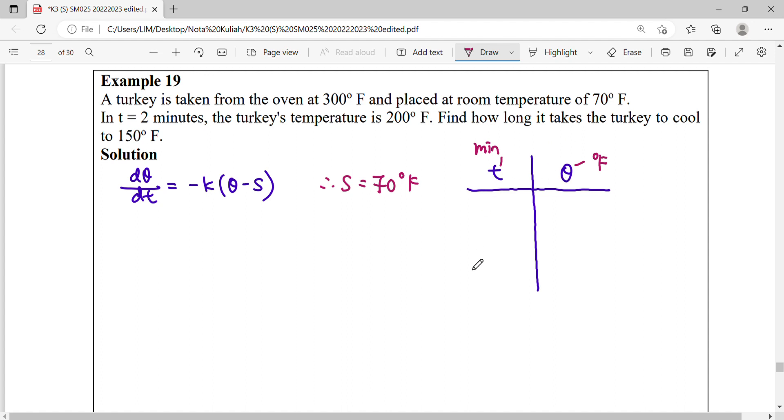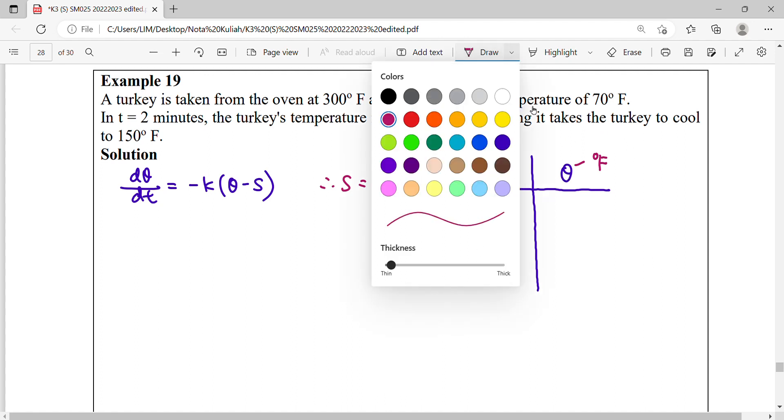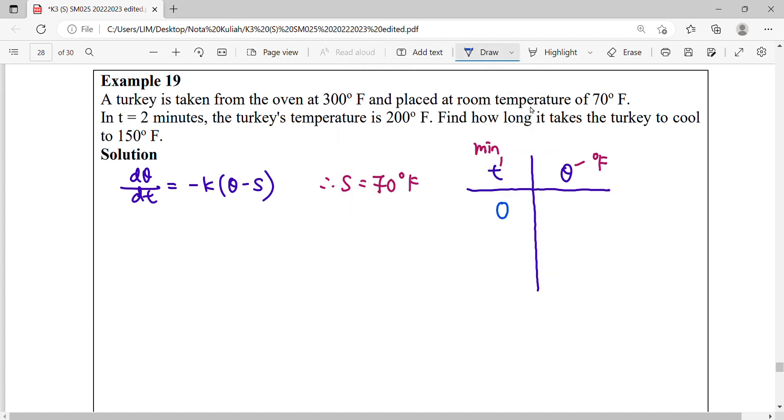Let's recount the story timeline. At the beginning when t is zero, your turkey comes from the oven which is 300 Fahrenheit. After two minutes this temperature is 200. The question asks how long, so find the T for this turkey to cool until 150 Fahrenheit.